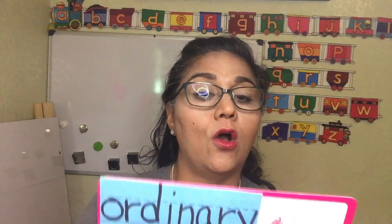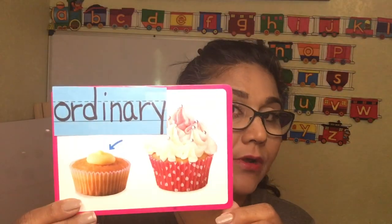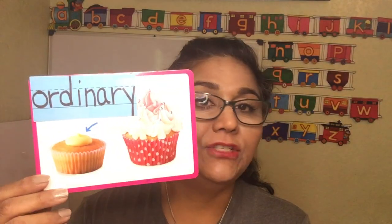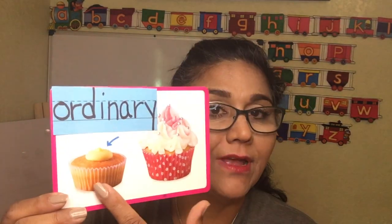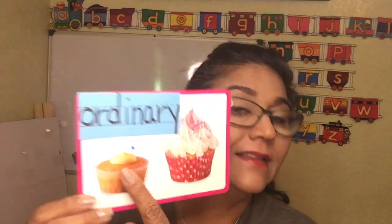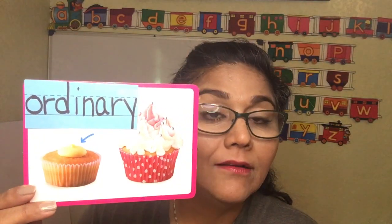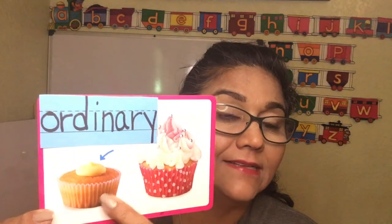Let's do half and then the other half, like we do every week. The first word for The Puddle Pail is 'ordinary.' Ordinary means plain, not fancy, just your basic. Right here you have just an ordinary cupcake — it has a little bit of frosting, no sprinkles, no chocolate, no caramel, nothing fancy. It's ordinary.